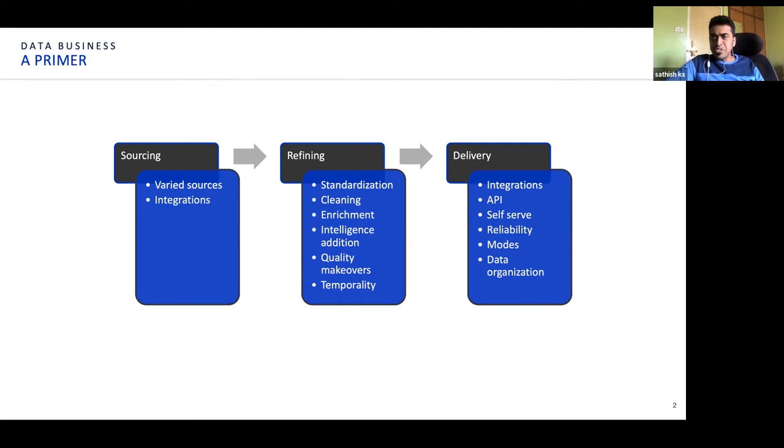You will have a bunch of enrichments on top of it. Then you can apply heuristic or AI driven or ML driven intelligence addition. Then you have quality makeovers, whatever is needed for statistical quality or anomaly detection. The final point is adding temporality. Temporality is the time dimension, because any data you collect, almost 90% of the data would lose value over time.